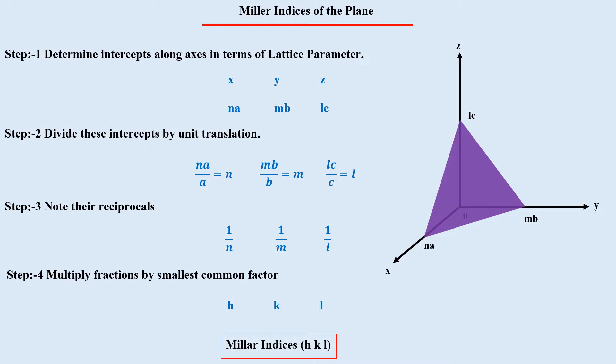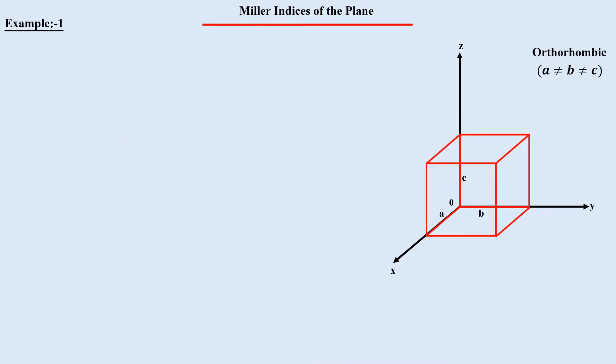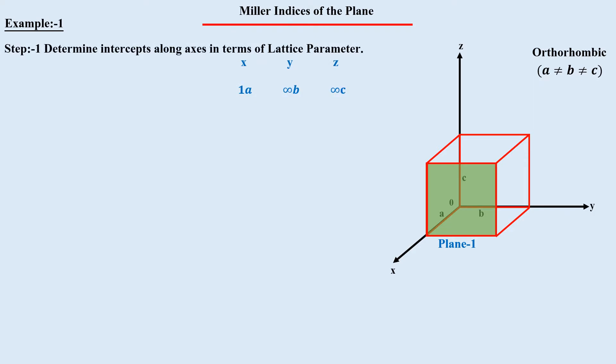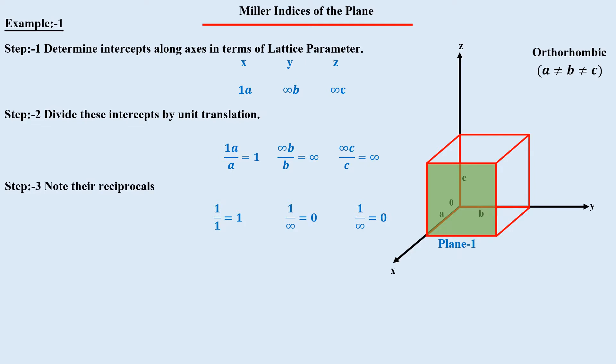As a practical example, consider an orthorhombic lattice with lattice parameters a, b, and c. Let us calculate the Miller indices of a plane that cuts the x-axis at a but is parallel to the y- and z-axes, meaning it cuts those axes at infinity. The intercept points are 1a, ∞b, and ∞c. Dividing by lattice parameters gives 1, ∞, ∞. Taking the reciprocal gives 1, 0, 0 — these are already integers, so no further multiplication is needed. Hence, the Miller indices of this plane are (1 0 0).